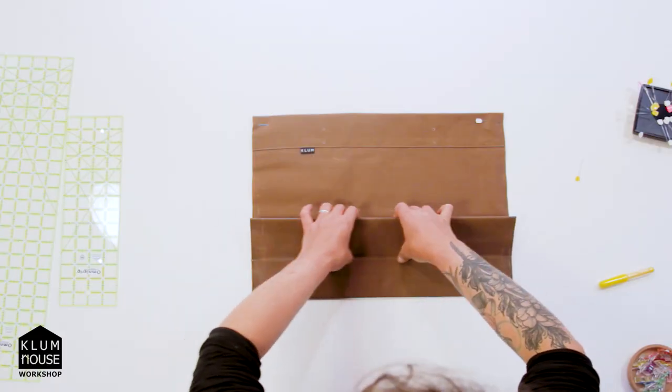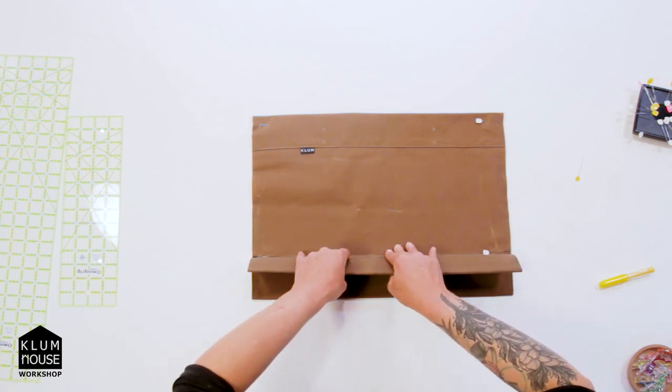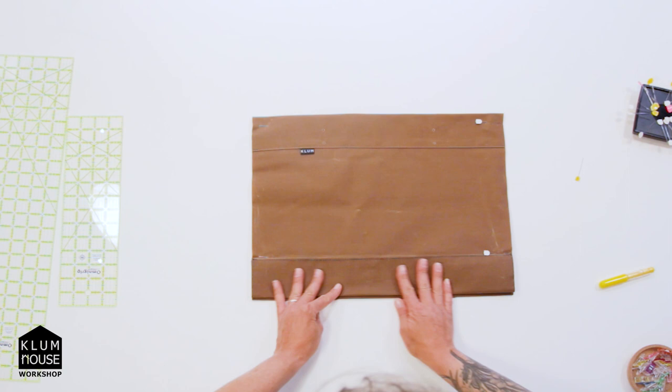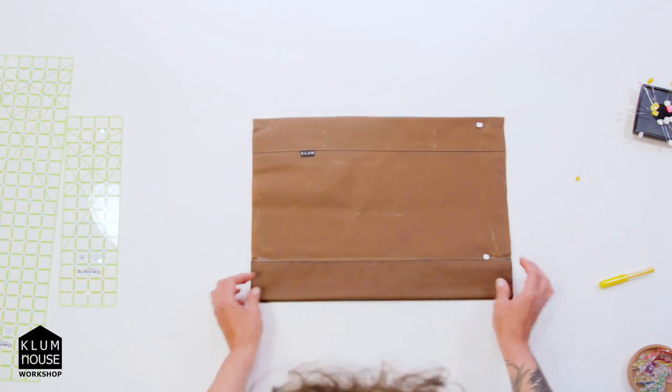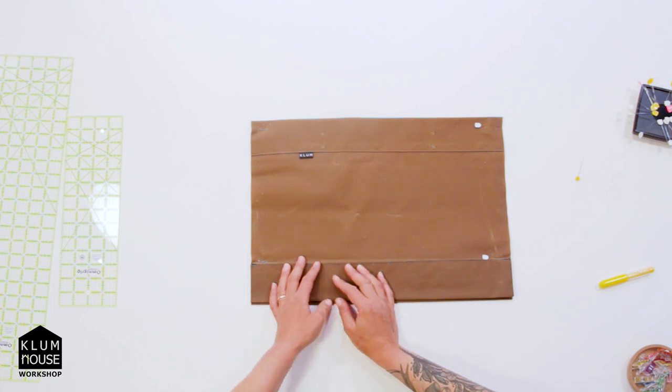Then I'm going to take this whole part here and I'm going to pivot it down at the center point and fold it down just like that, okay. So that's how I'm creating the fold for the envelope base.